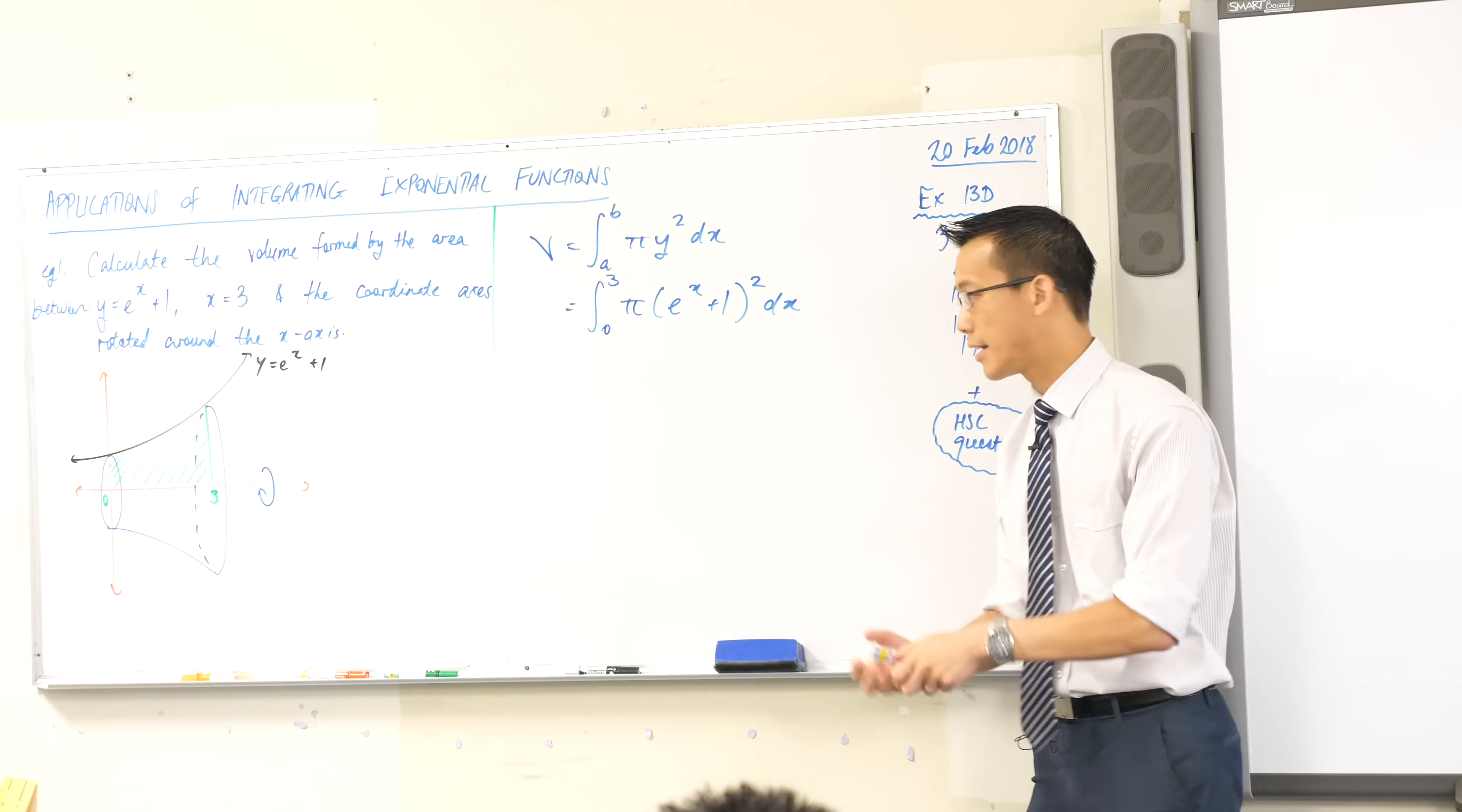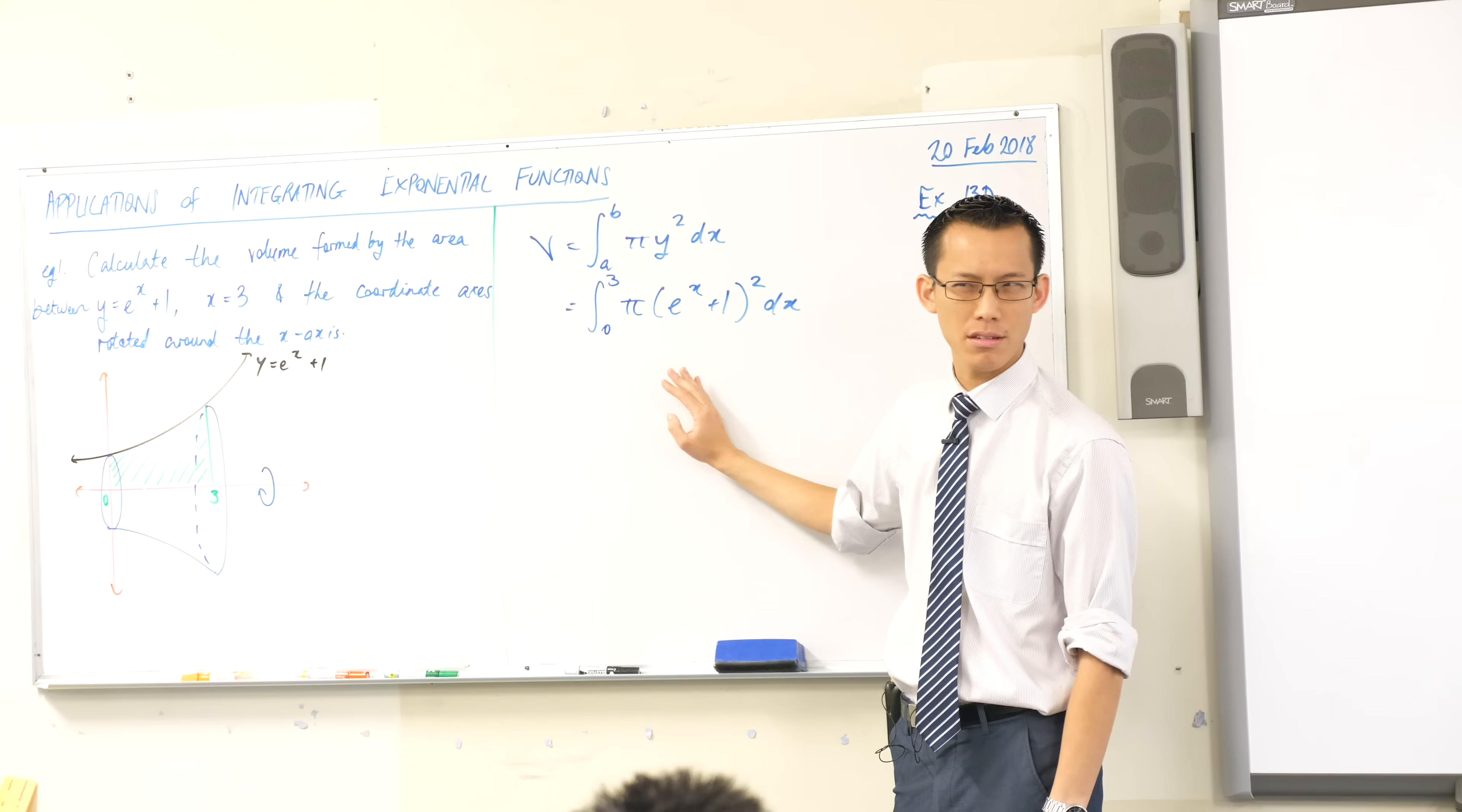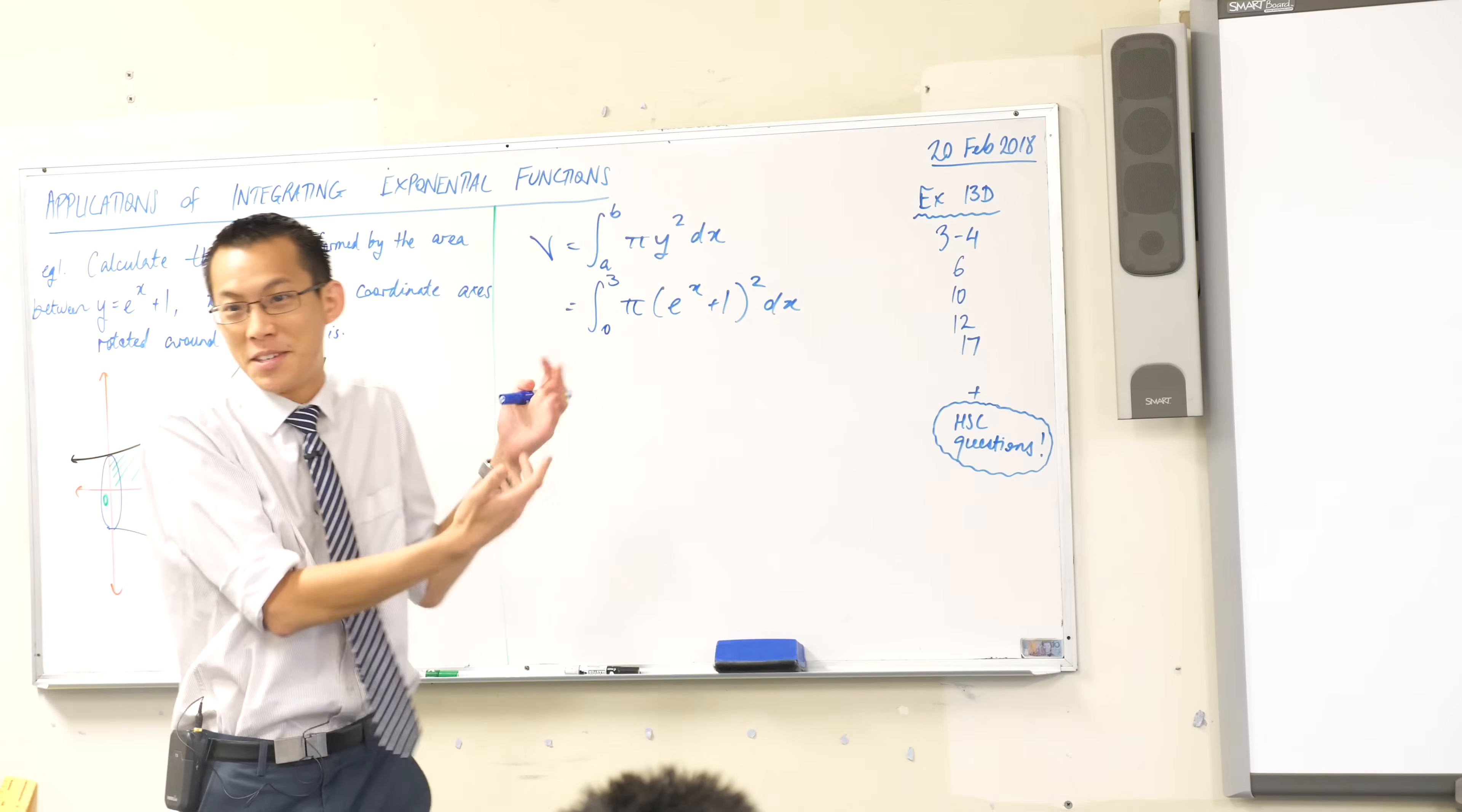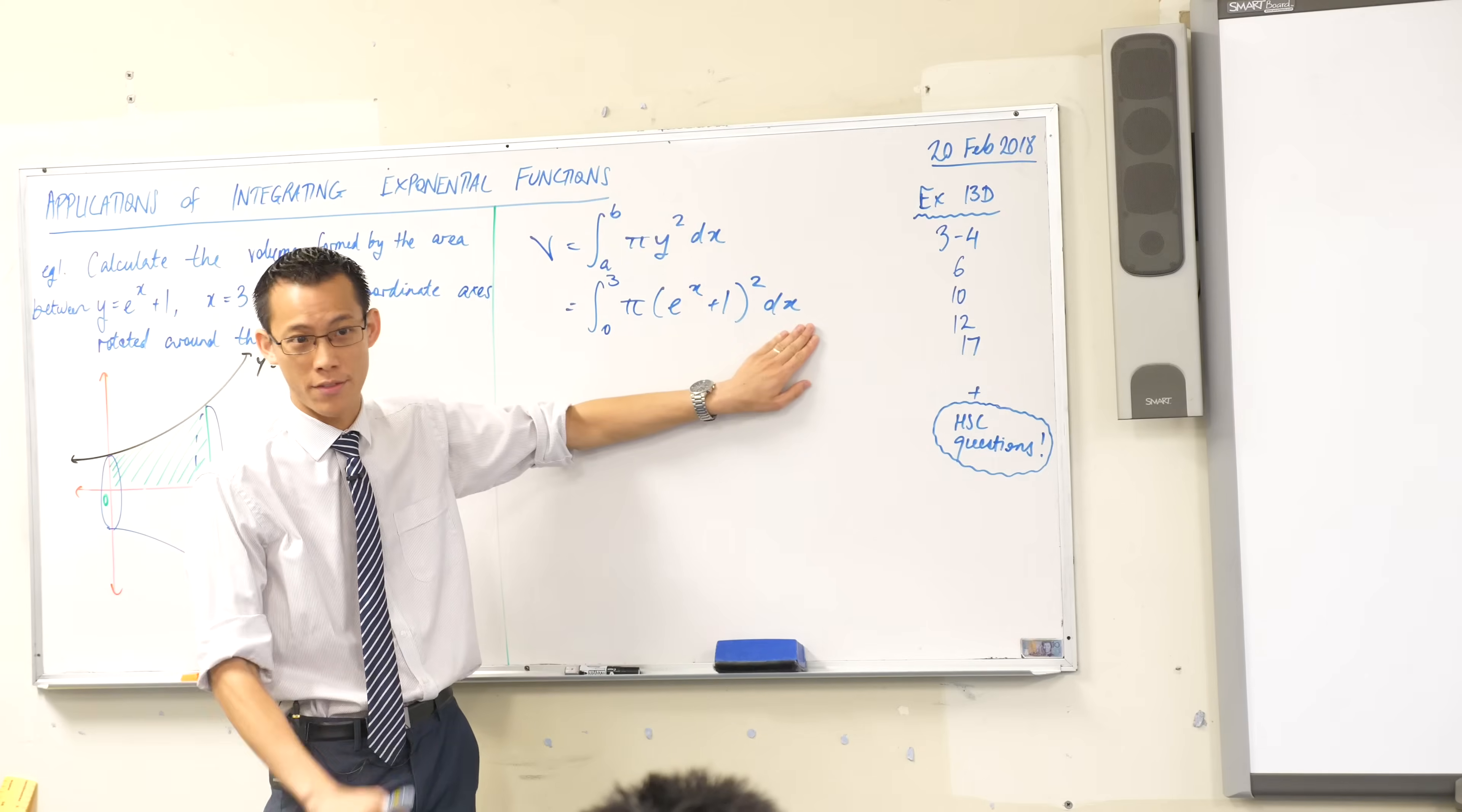When you have something squared, it's very tempting to think integration by substitution or reverse chain rule. There's a slight problem with that. If I wanted to do reverse chain rule on this, here's your inside function. So what would your inside derivative be? Because that has to be somewhere in here. It would be e to the x. The plus one, you differentiate that, it just disappears, just a constant. So I need another e to the x flying around somewhere, but as you can see, it's nowhere to be found. So the reverse chain rule doesn't get you anywhere.